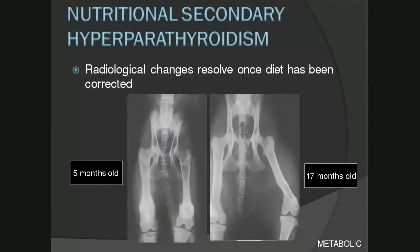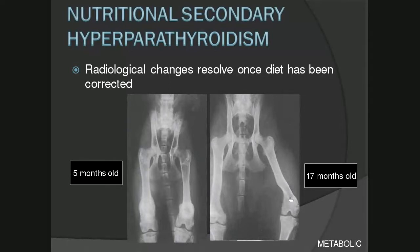This slide demonstrates how radiological changes can resolve once the diet is corrected. From the kitten at five months old to 12 months later, the fracture sites have remodeled. Cortices and bone are almost back to their normal width. There is a little bowing and abnormal shape remnant, but the overall bone density is much more opaque than previously when it was osteopenic.